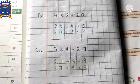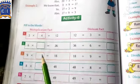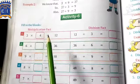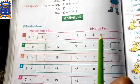So students you have to do this Activity 6. How do you do it? First you have to make a multiplication fact and then you have to make a division fact.